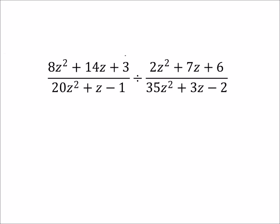So this first term here, I've got 8z squared plus 14z plus 3. So to factor this one out, I'm going to use factoring by grouping. So I'm going to take 8 times 3, which is going to be 24.